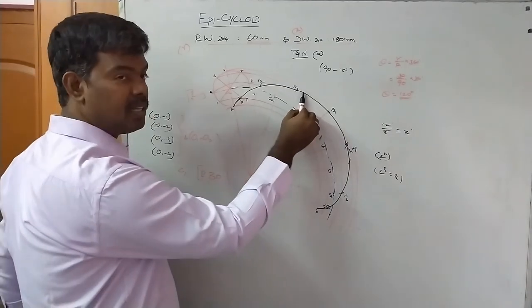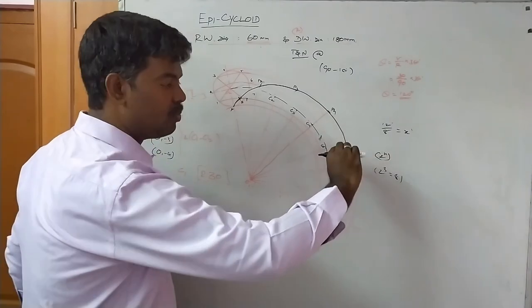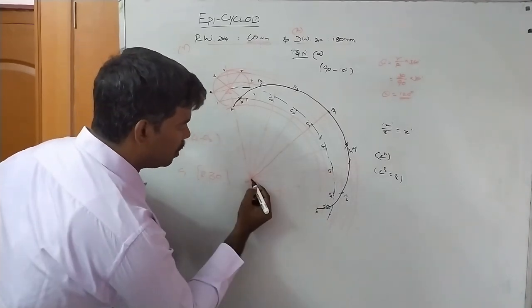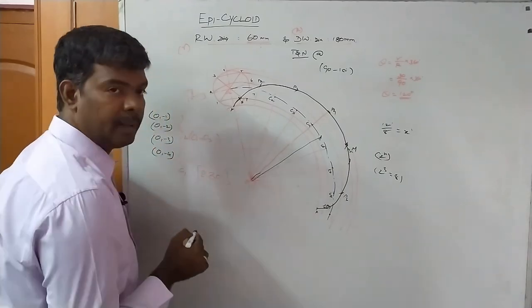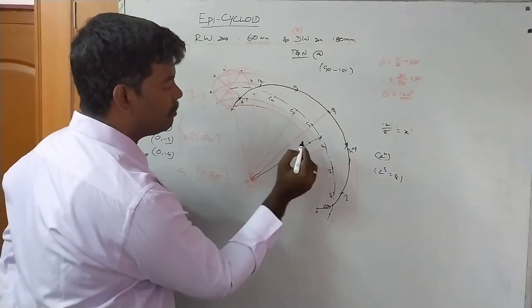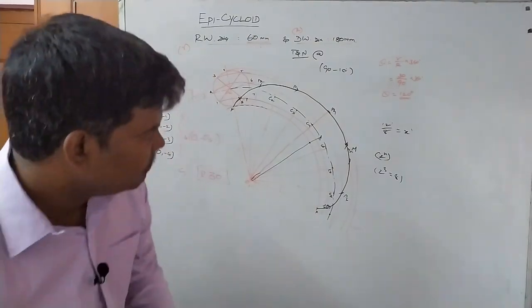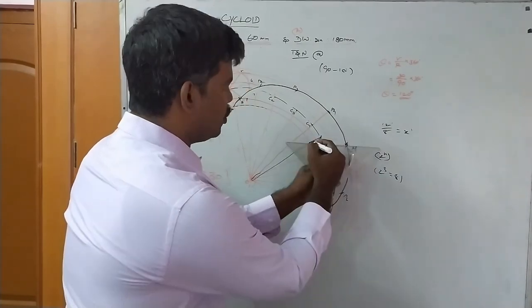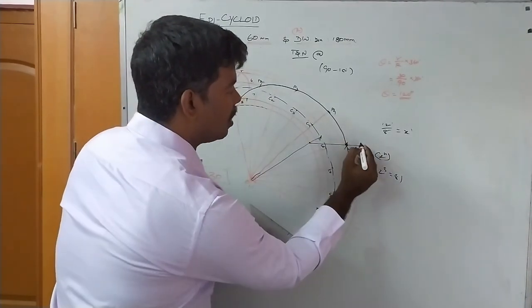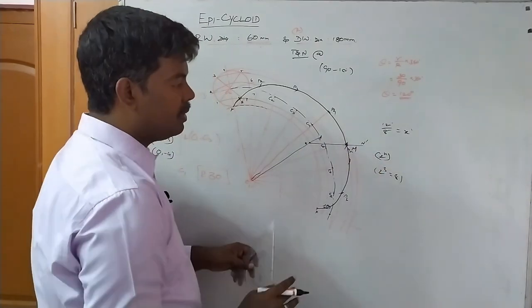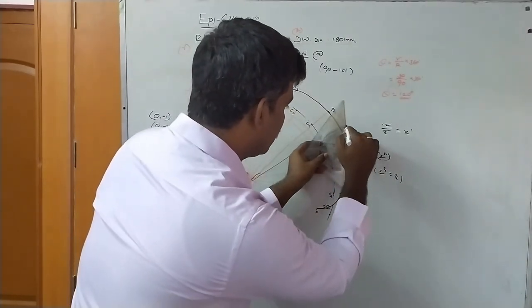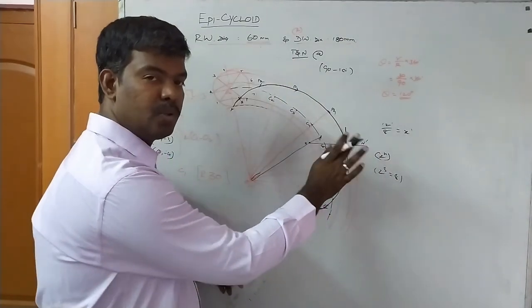Reverse procedure: the given point M on the curve is taken as center, and using the rolling wheel radius of 30 mm, intersect the locus-of-center arc to find the corresponding center point. Join that center point to O1 — where this line intersects the directing wheel arc gives another point. Join these two points to draw the normal N-N'. The tangent is perpendicular to the normal N-N', giving the tangent line at 90 degrees.